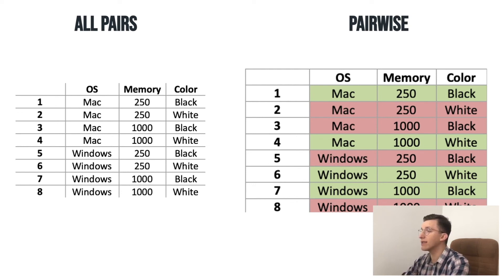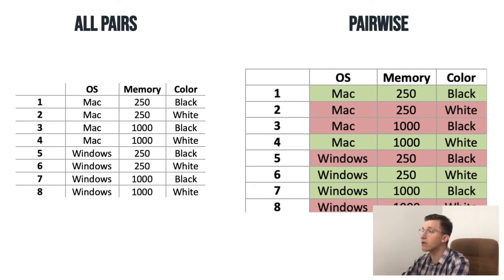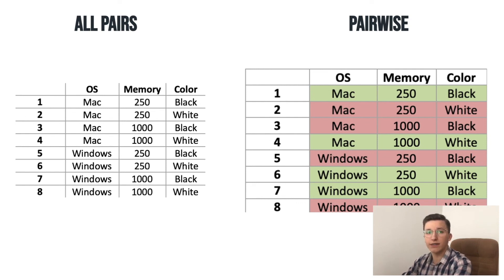There is enough to test only unique combinations: Mac is combined with 250 in the first test case, and Mac is combined with memory value 1000 in the fourth test case. Black and white are also combined at the third level of dependencies. The tests marked in red are not applicable for Pairwise because they duplicate our activities — we do not find any additional issues by running those test cases. For a big scope of test data we use an automated approach, and links for those automated tools are presented in the previous slide.